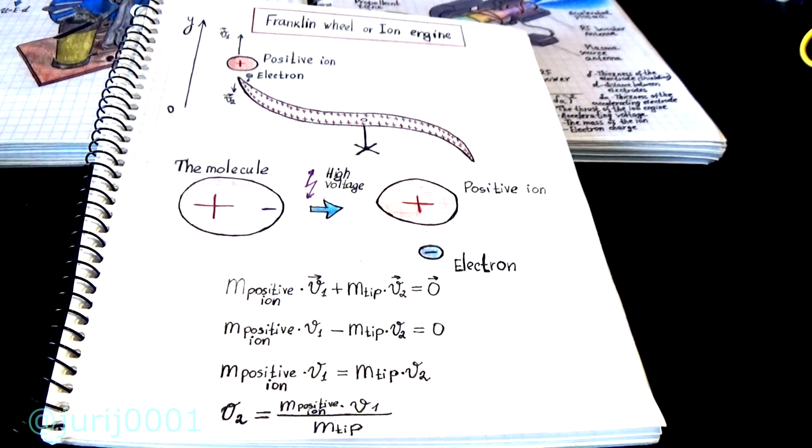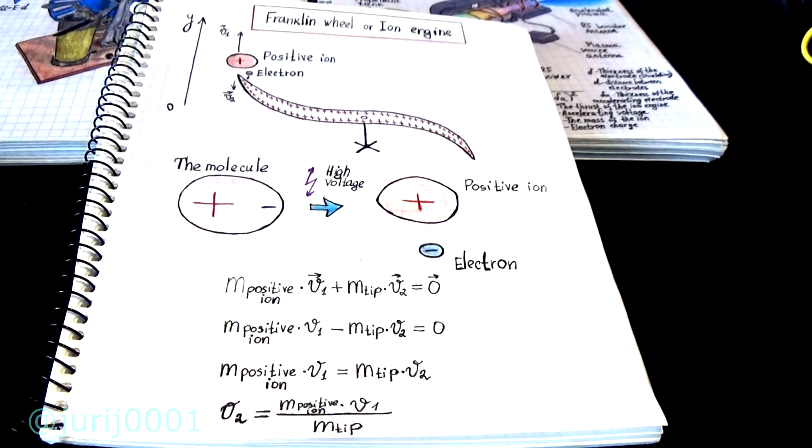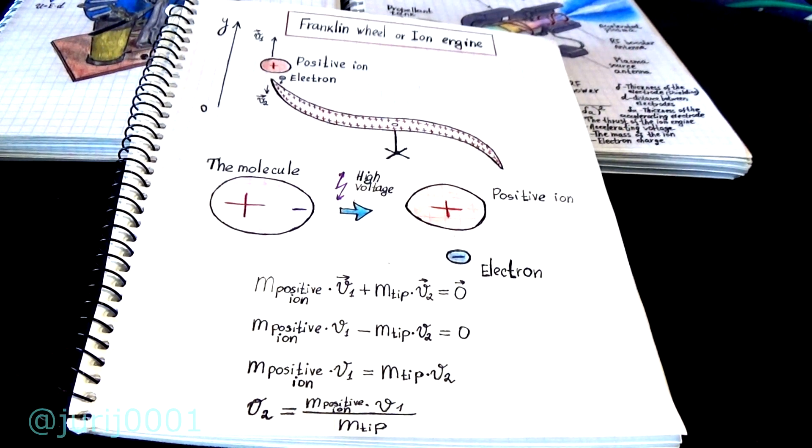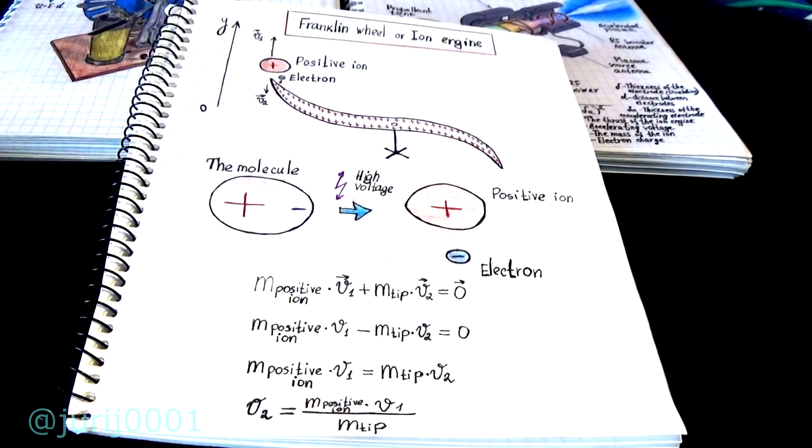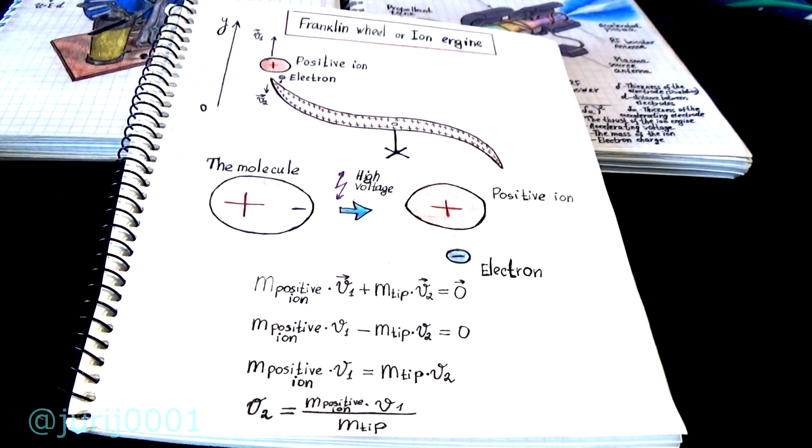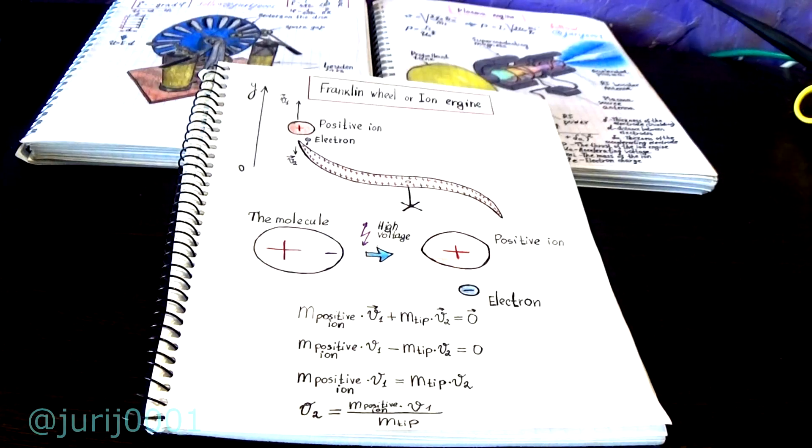This principle can be used in rocket ion engines. It is impossible to take off on these engines, but in space without air they can reach high speeds much more than chemical jet engines.